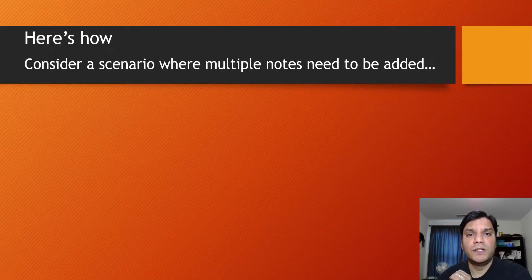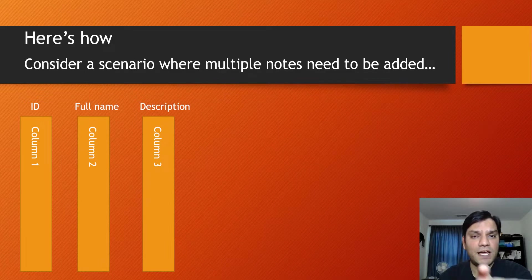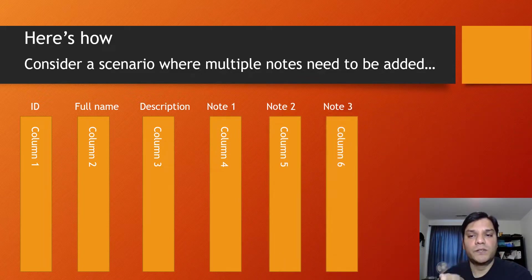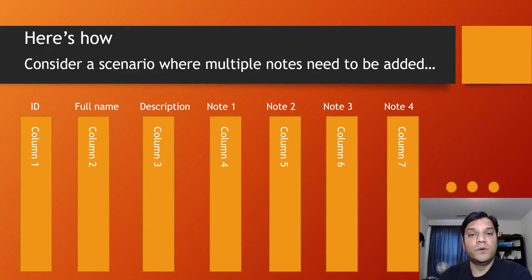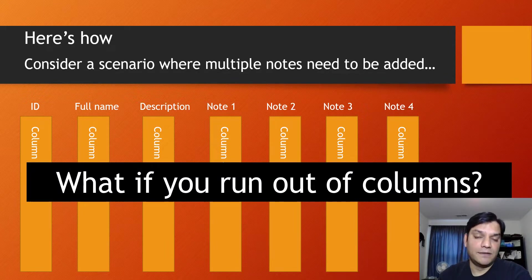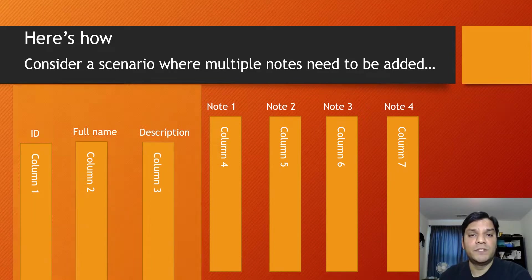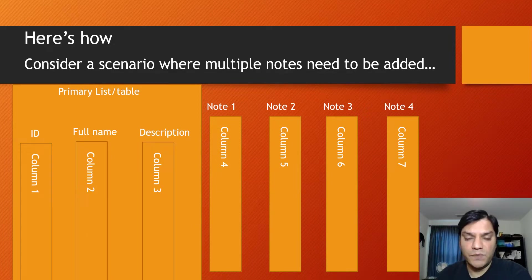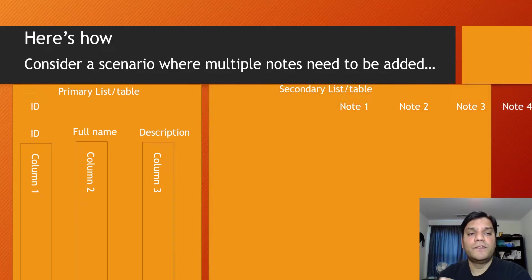Let me walk you through how that works. In this app, I'm saving notes based on entries. Initially, you might have the ID, full name, description, and then start adding note one column, note two, note three — and that's the problem, you keep adding more and more columns. What you want to do instead is break them down into two separate tables. The first is the primary table or list, where you keep the primary information: an ID, the user's name, the description.